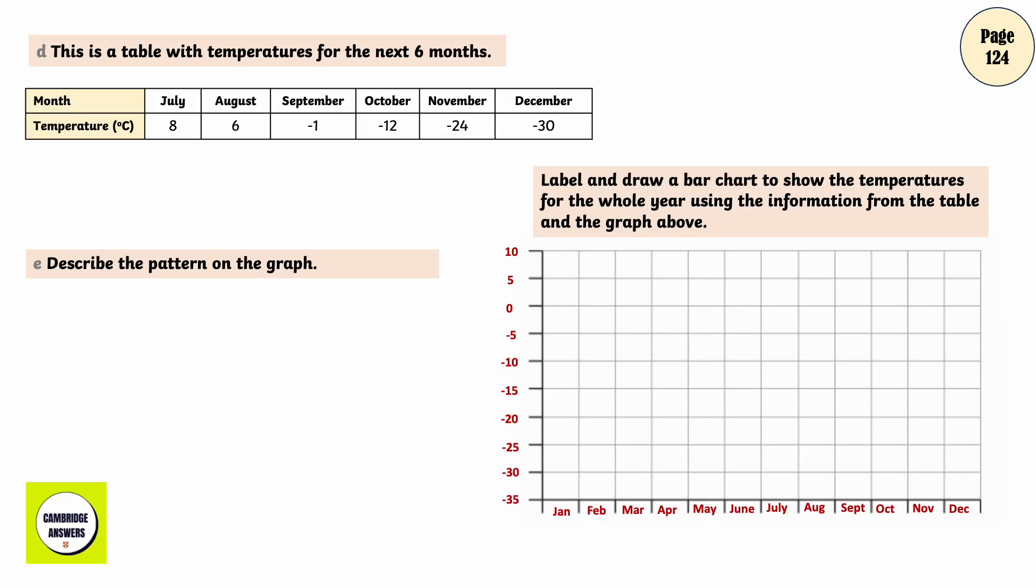This is a table with temperatures for the next 6 months. Month July, Temperature 8 degrees Celsius, August 6, September minus 1, October minus 12, November minus 24, December minus 30.